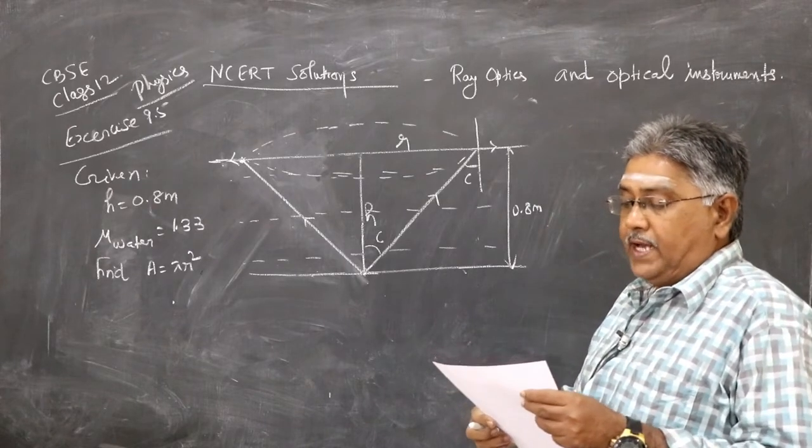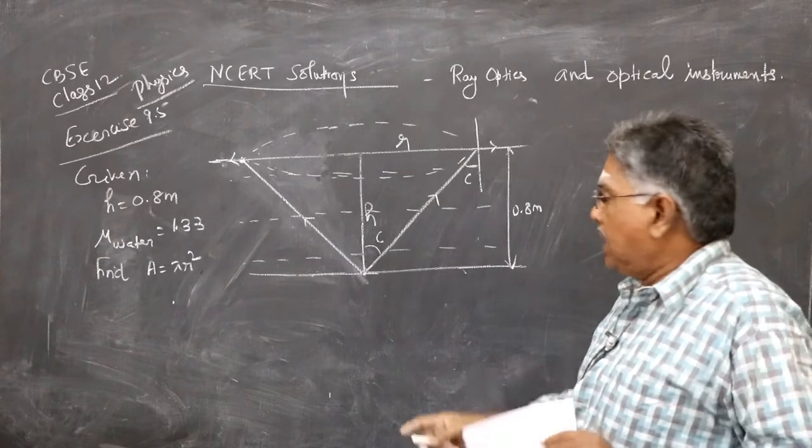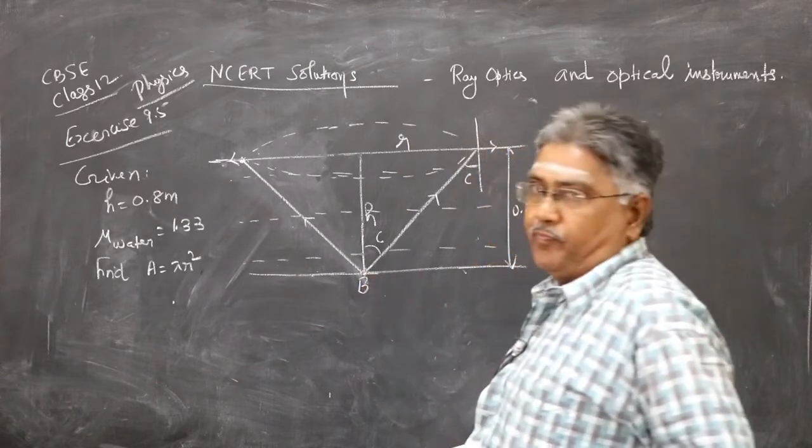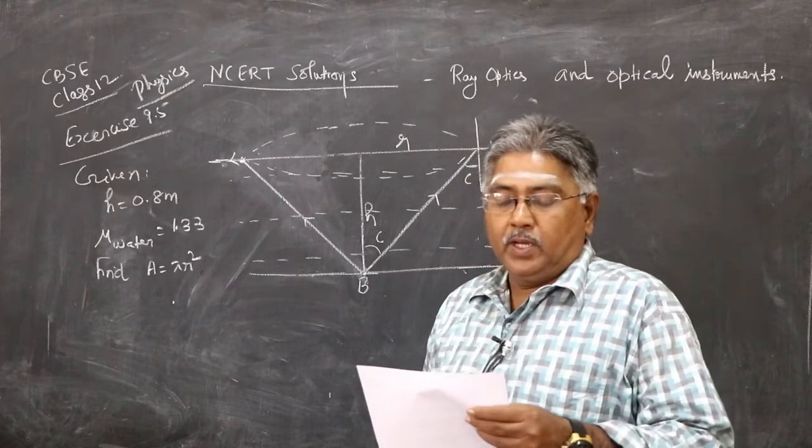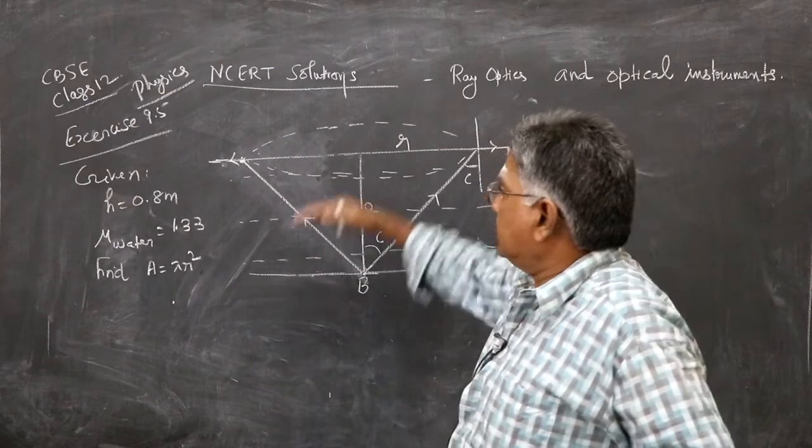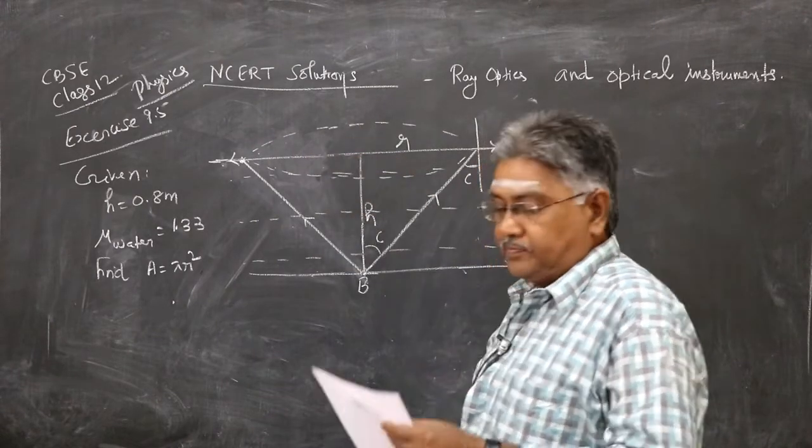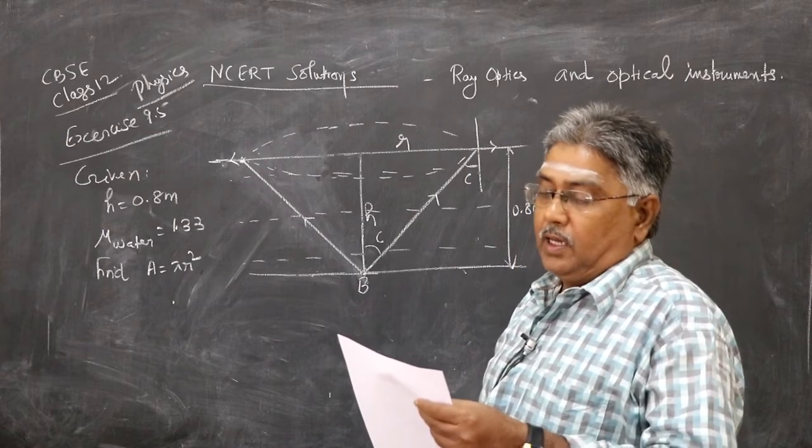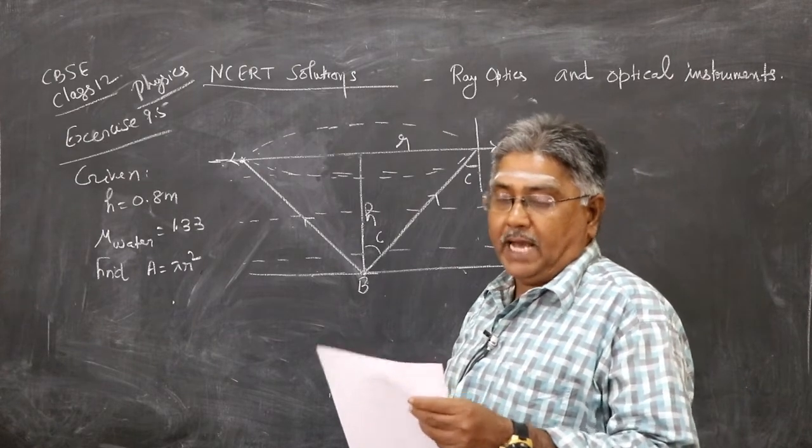Let's say here is the bulb. Area of the surface of water, area through which light from the bulb can emerge out. You are asked to consider the bulb to be a point source.